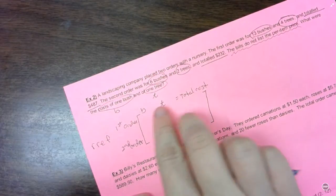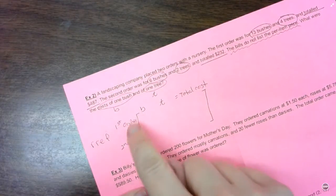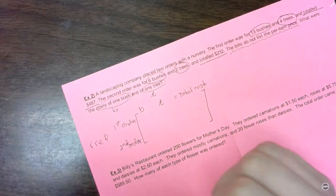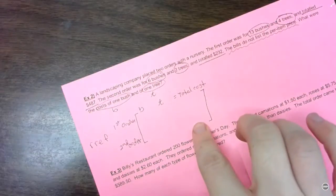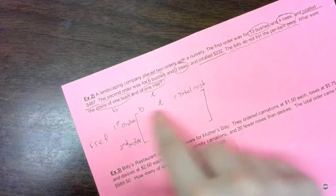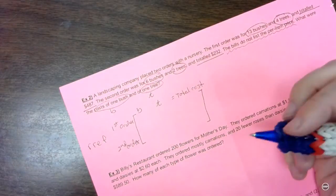And just like the last one, you could put tree first and then bush. It doesn't matter. You could put the second order on top and the first on the bottom. None of that matters. As long as you've got your variables in your columns, your total in a column, and your two equations, or your two situations.